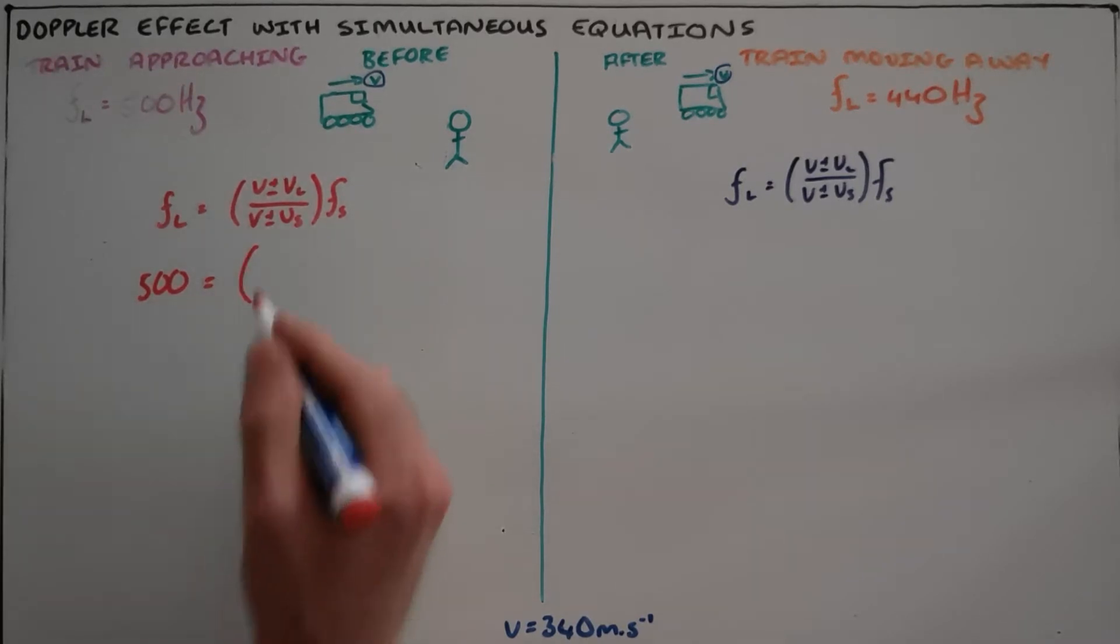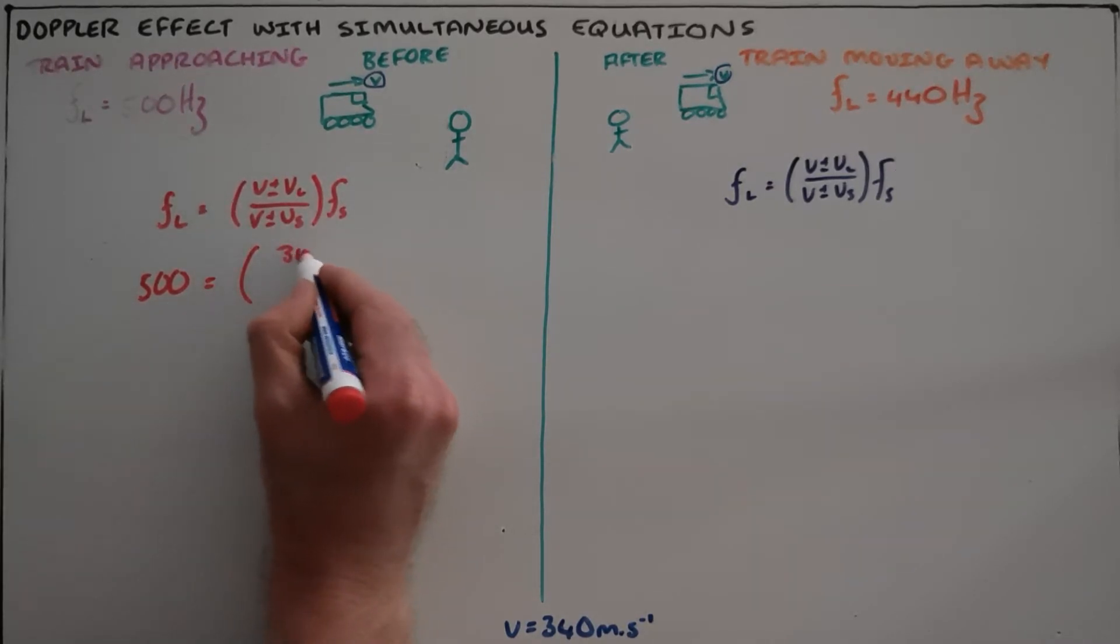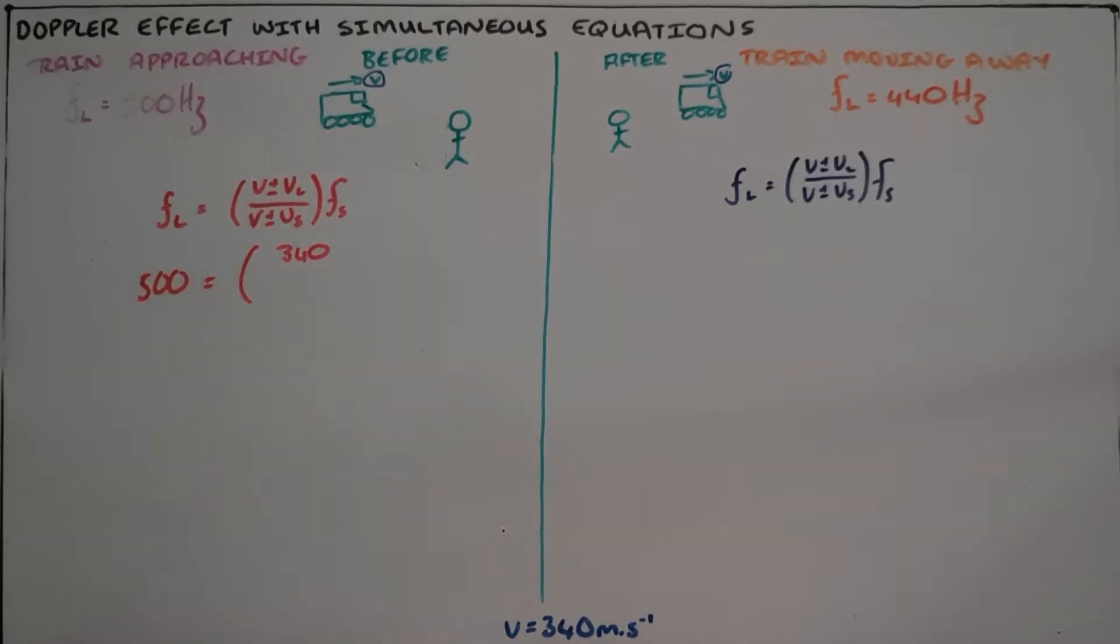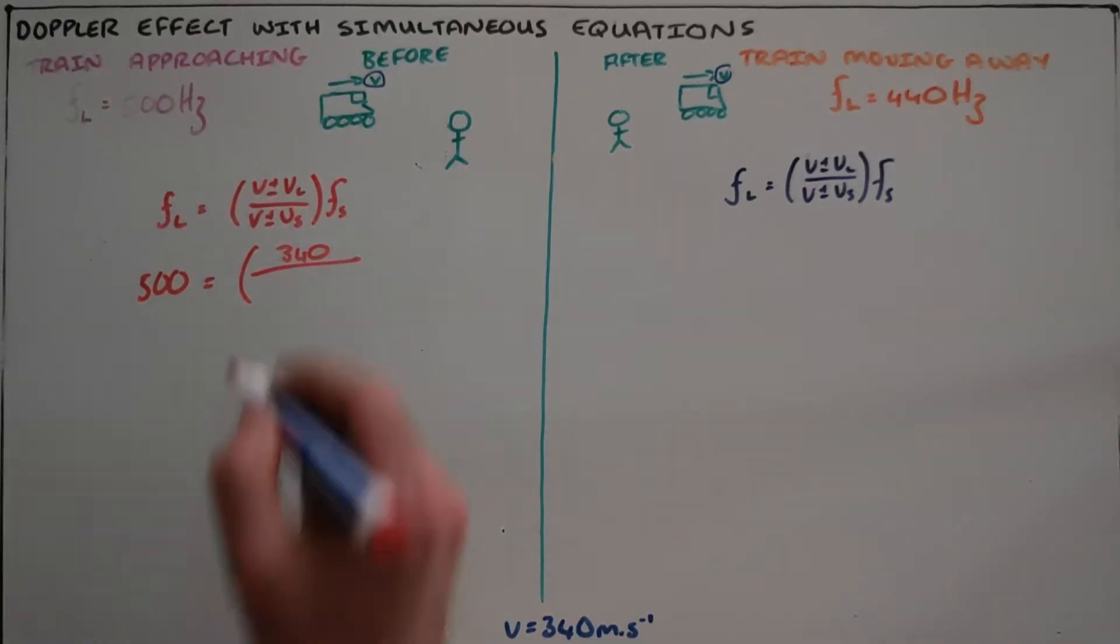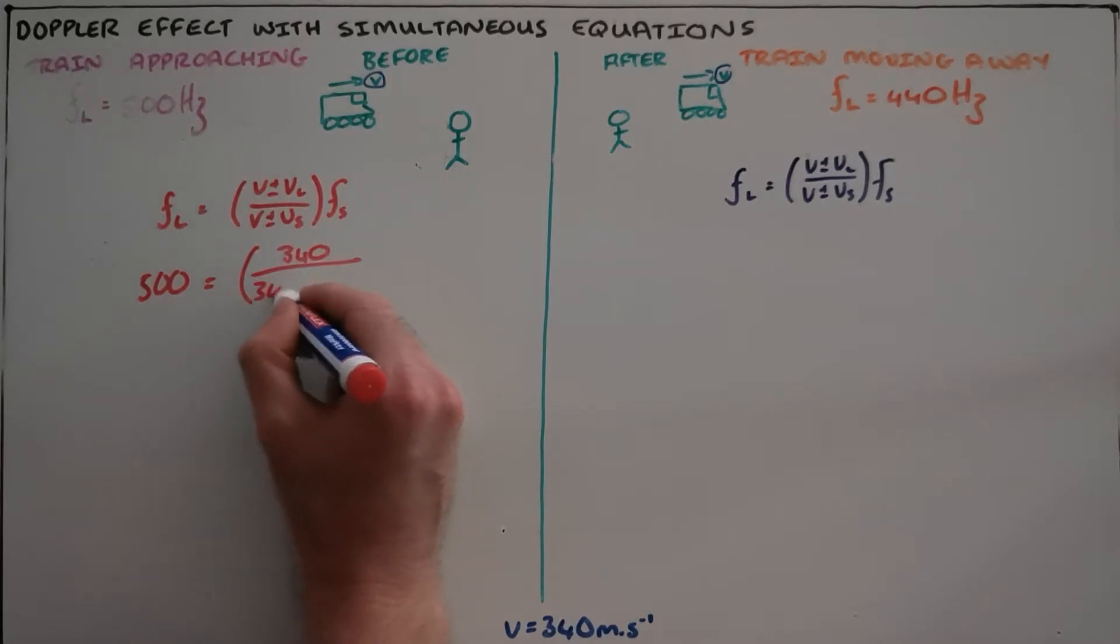We are told that the observer is stationary and therefore there is no speed there, and we are always given the speed of sound in air. In this case, that is 340 meters per second.